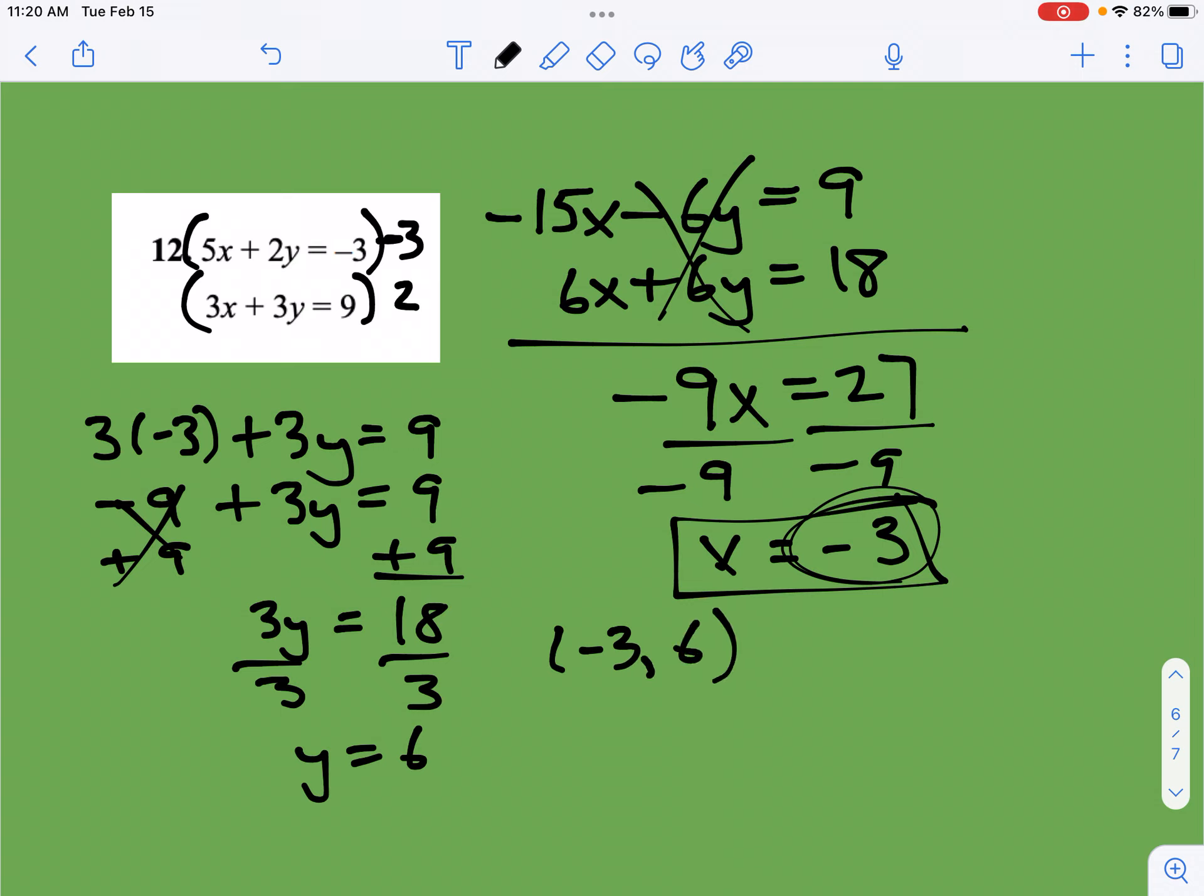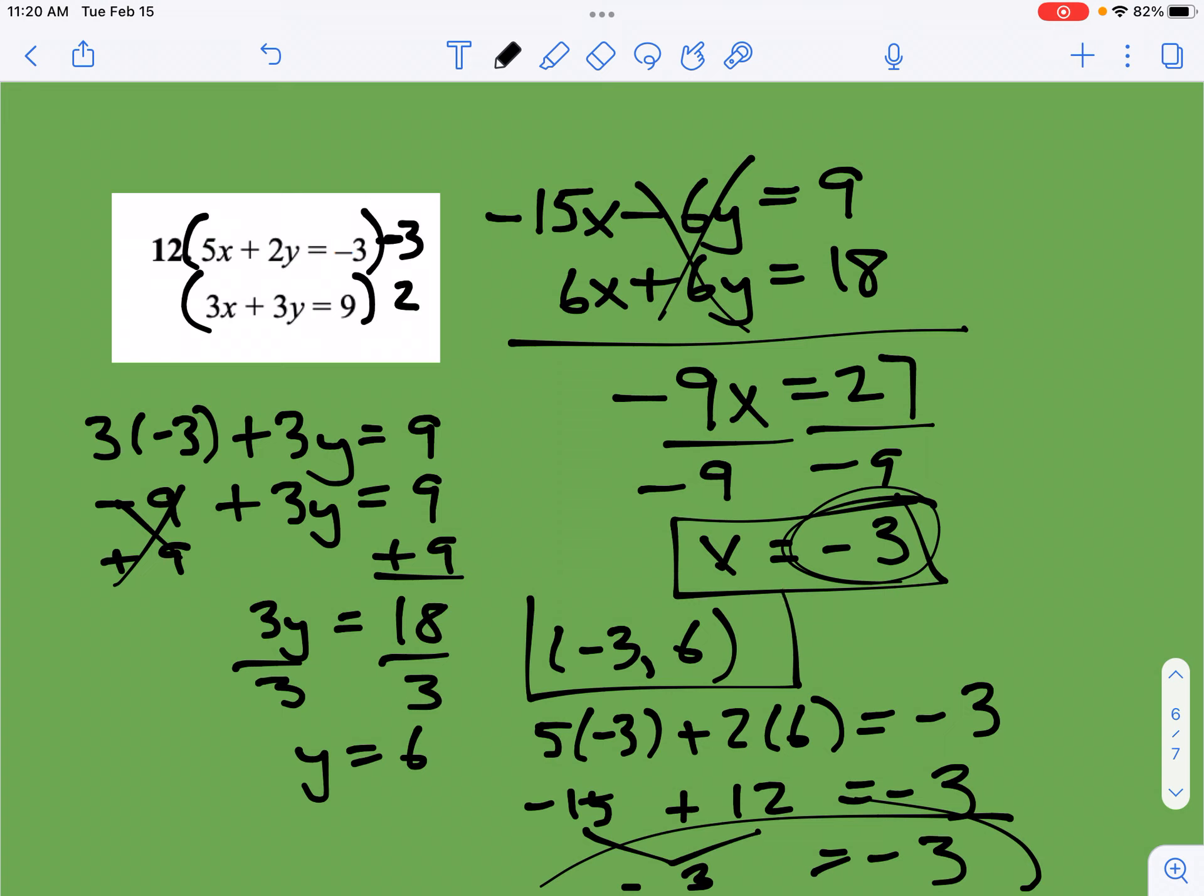So there's my answer. Let's put this into the top equation. So we're going to go 5 times negative 3 plus 2 times 6 equals negative 3. So we get negative 15, positive 12. And indeed, when you add these two together, you will get negative 3 is equal to negative 3. So that works, and we're happy with that. Here is our answer.